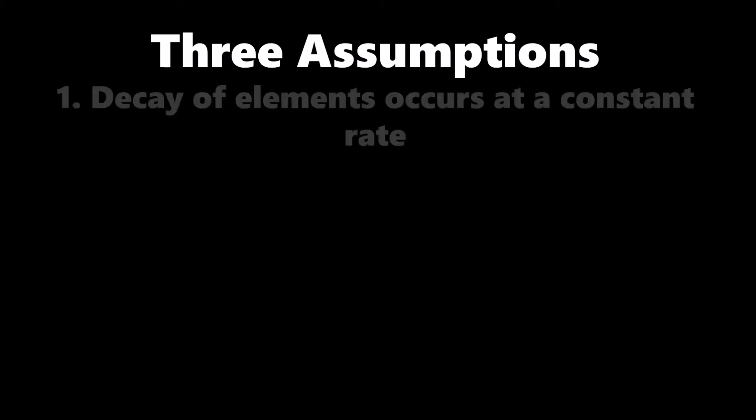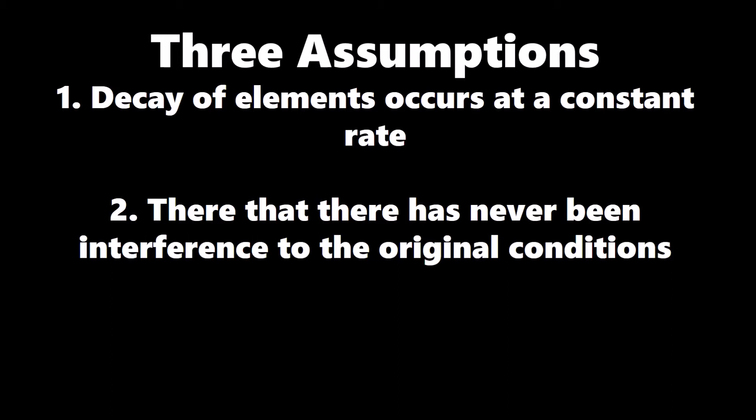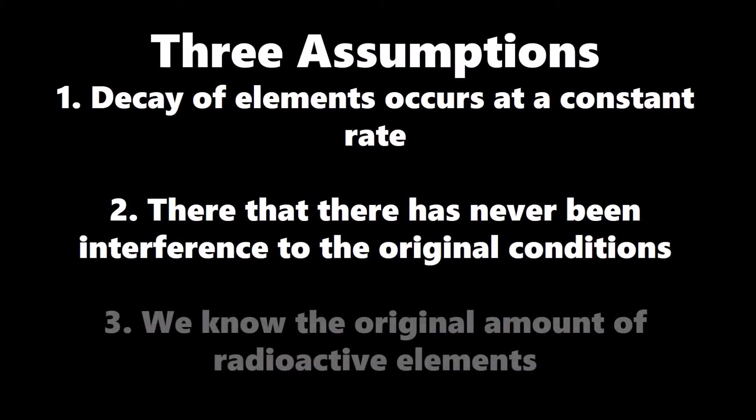In the radiometric dating process, there are three assumptions that are used. The first is the decay of elements occurs at a constant rate. The second is that there has never been an interference in the original conditions, and last is that we know the original amount of radioactive elements.